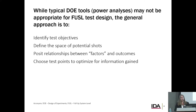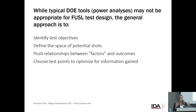We're still going to use the same general thought process and structure of design of experiments, but not the traditional tools. So we're going to identify the test objectives, define the space of potential shots, posit relationships between factors and outcomes, and then choose test points — in this case, optimizing for the information gained. That's the overall approach, and we're just stating that it's analogous to traditional DOE.